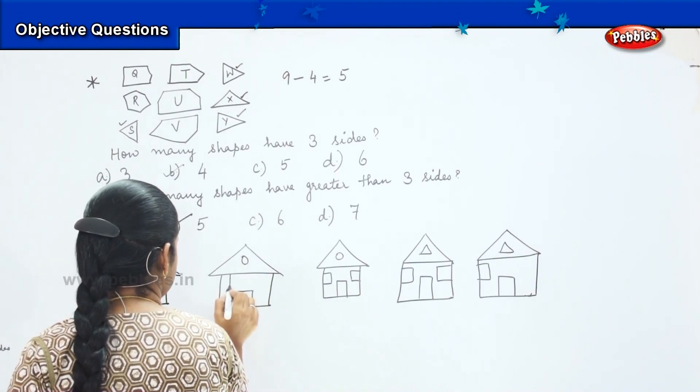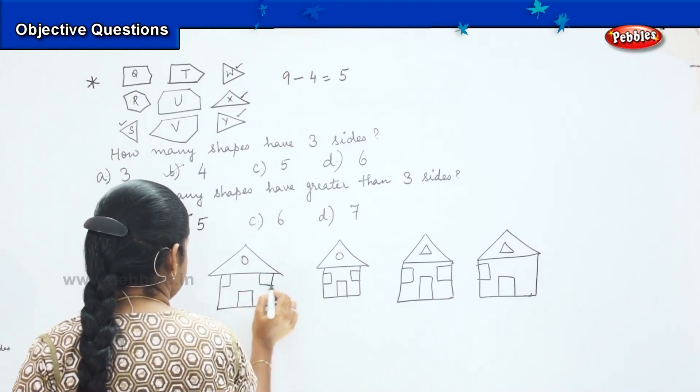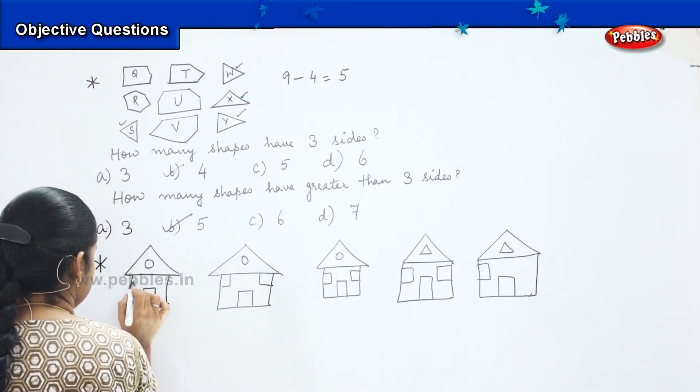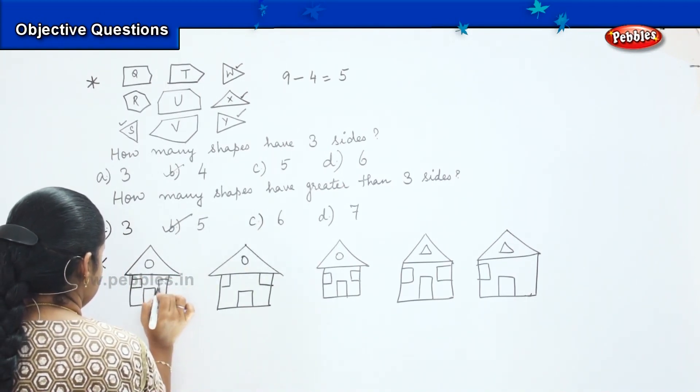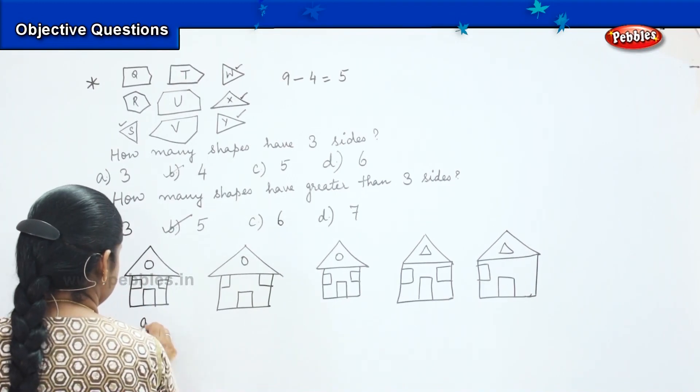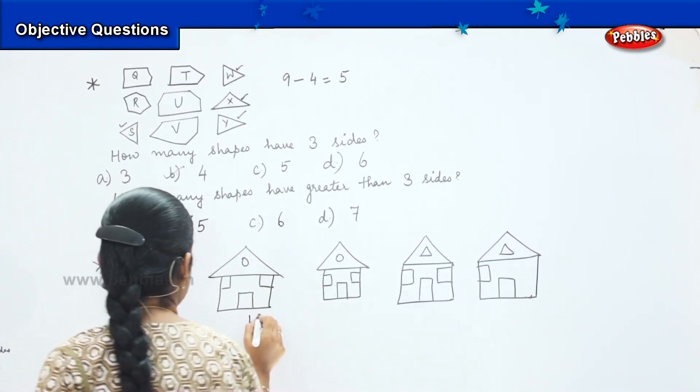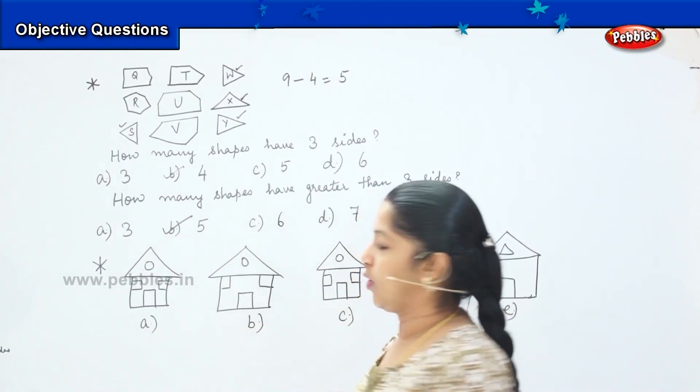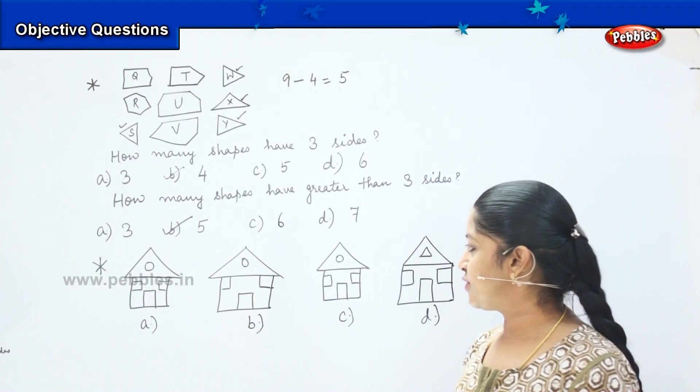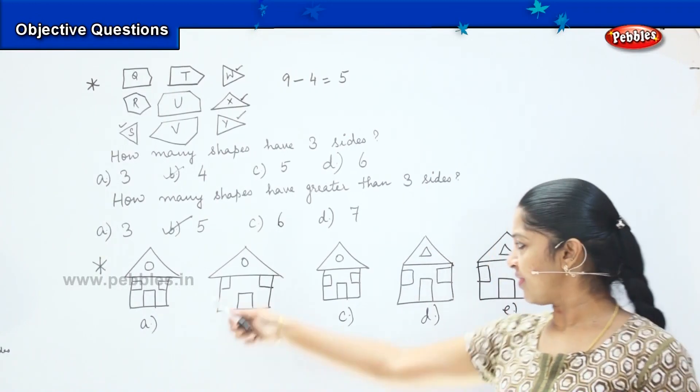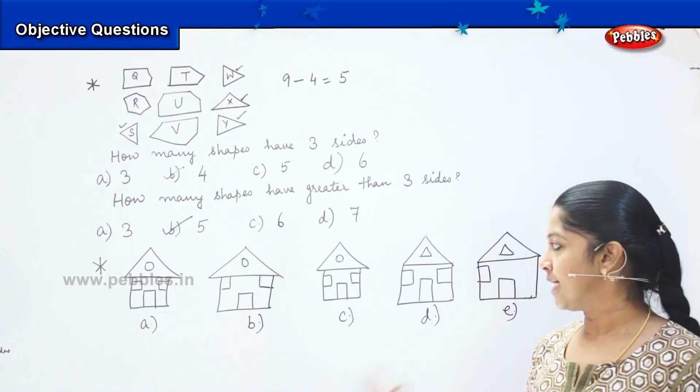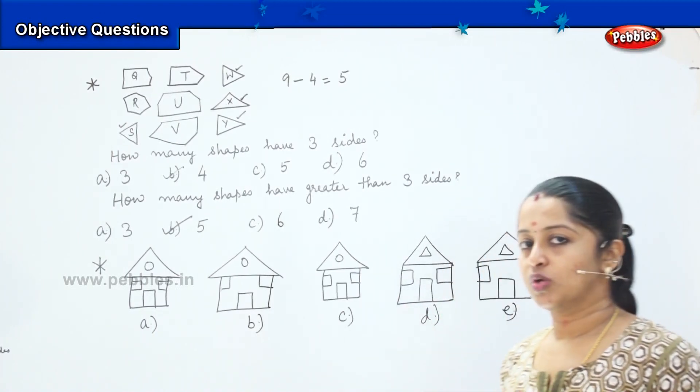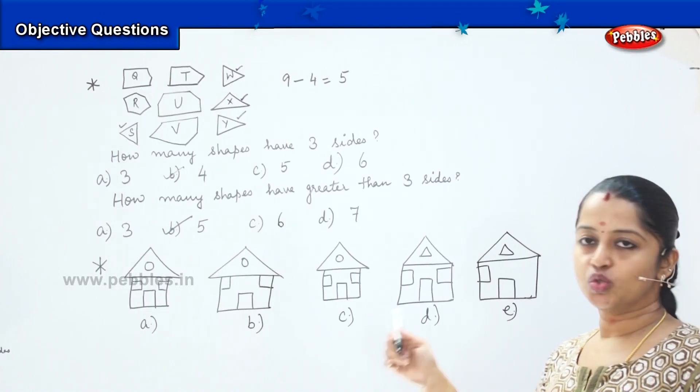Let's see. Okay, so now you need to find the similar figure. There are five houses and there is a very small difference in each house, but two of them are the same. So can you help me in finding out which two are similar?